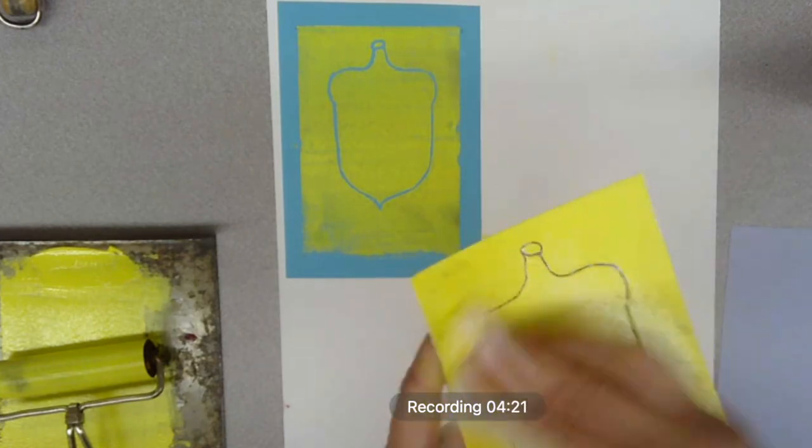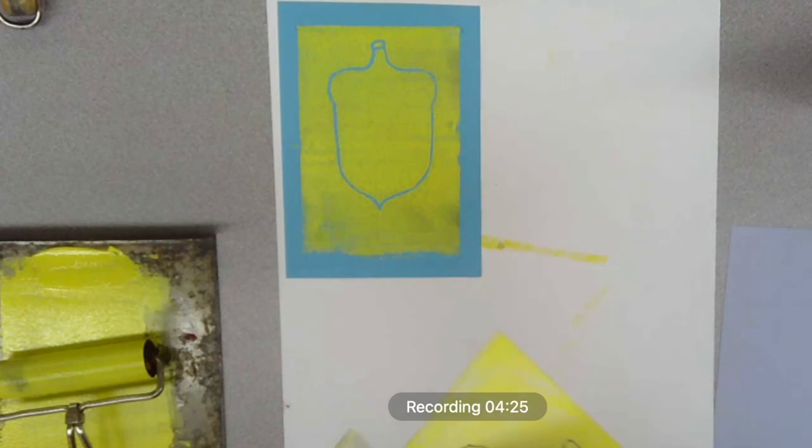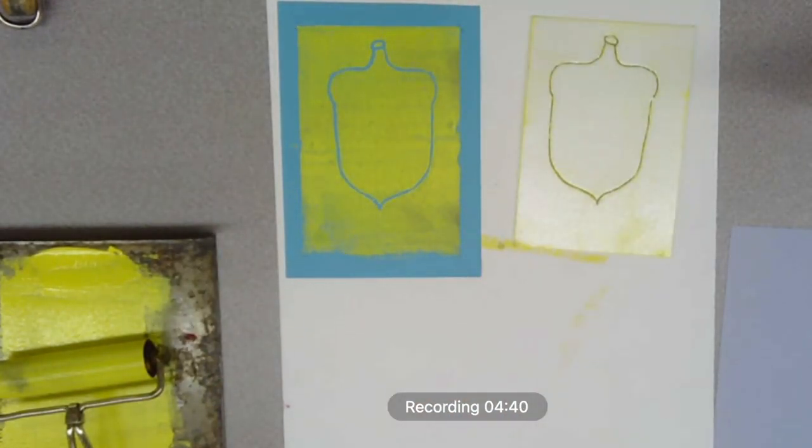We need to use that styrofoam plate again, so we have to clean it off. You can use a wipe or spritz some water and get some paper towels. You must do that delicately, you don't want to break your styrofoam. Rub it all off, dry it off, because we're going to do another print using the same plate.